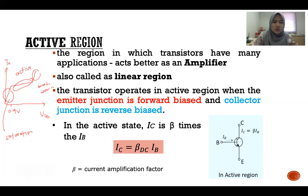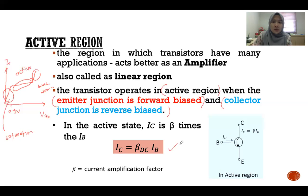This is important: the transistor operates in the active region when the emitter junction is forward biased and the collector junction is reverse biased. In the active state, the collector current IC is beta times IB. This formula — IC equals beta_DC times IB — was introduced in Part 1.